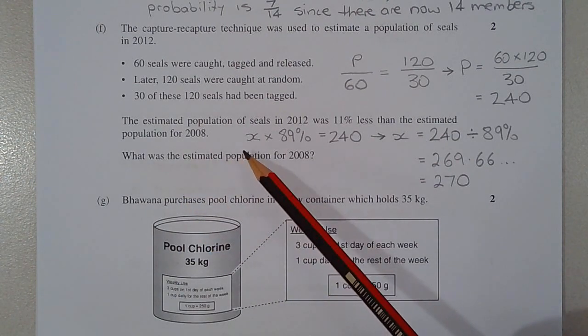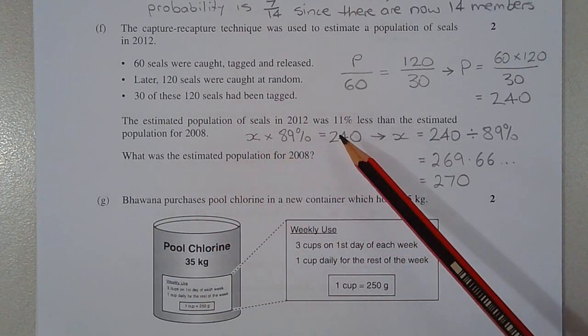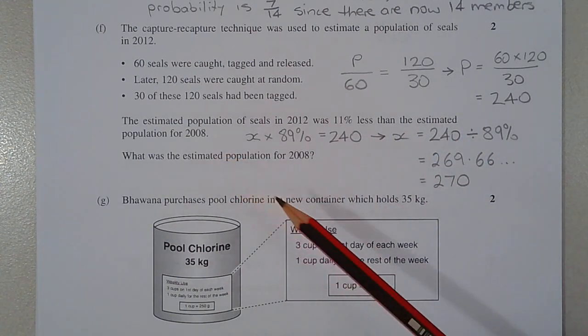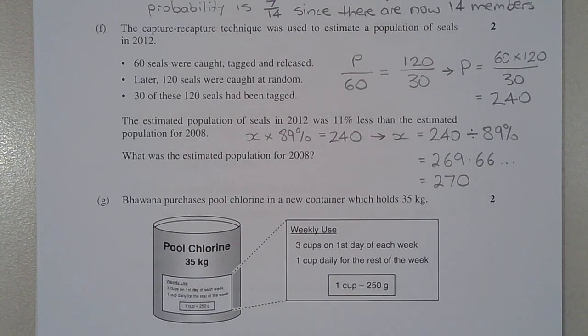Now the estimated population of seals in 2012 was 11% less than the estimated population for 2008. So that means, going back in time, the population of seals would be higher. So we're expecting a value that's greater than 240.